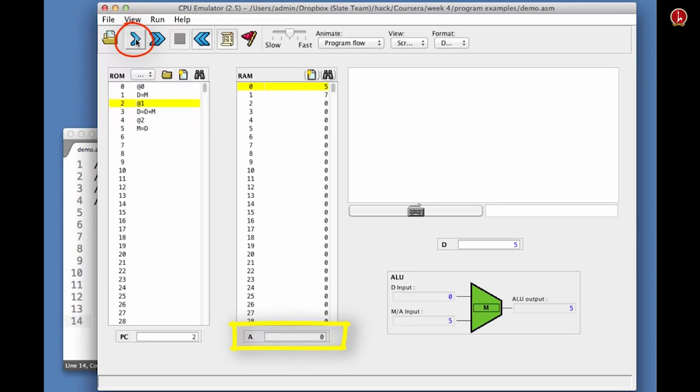Then we do at one, and we see that A contains one. Let's do D equals D plus M. We see that D became 12. Then we set A to two. We do M equals D, and we see that, lo and behold, RAM two contains 12, which is exactly what we wanted to get. So the program seems to be working.